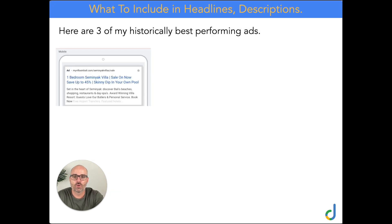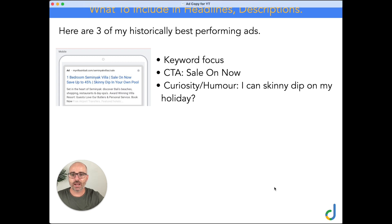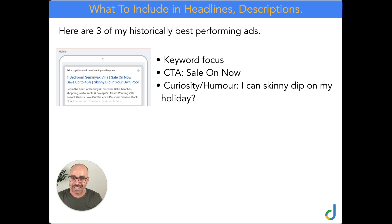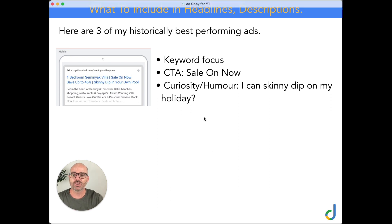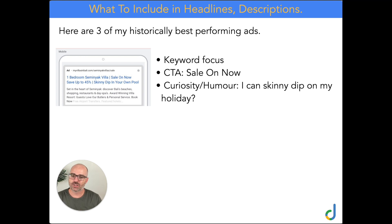Here are my three historically best performing ads. This first one is for a villa resort in Bali — specifically one-bedroom Seminyak villas. Right off the bat: 'One-Bedroom Seminyak Villa.' That's our keyword focus. This ad is targeting one-bedroom Seminyak Villa searches, and this alone puts us far ahead of the competition because a lot of people don't do this.